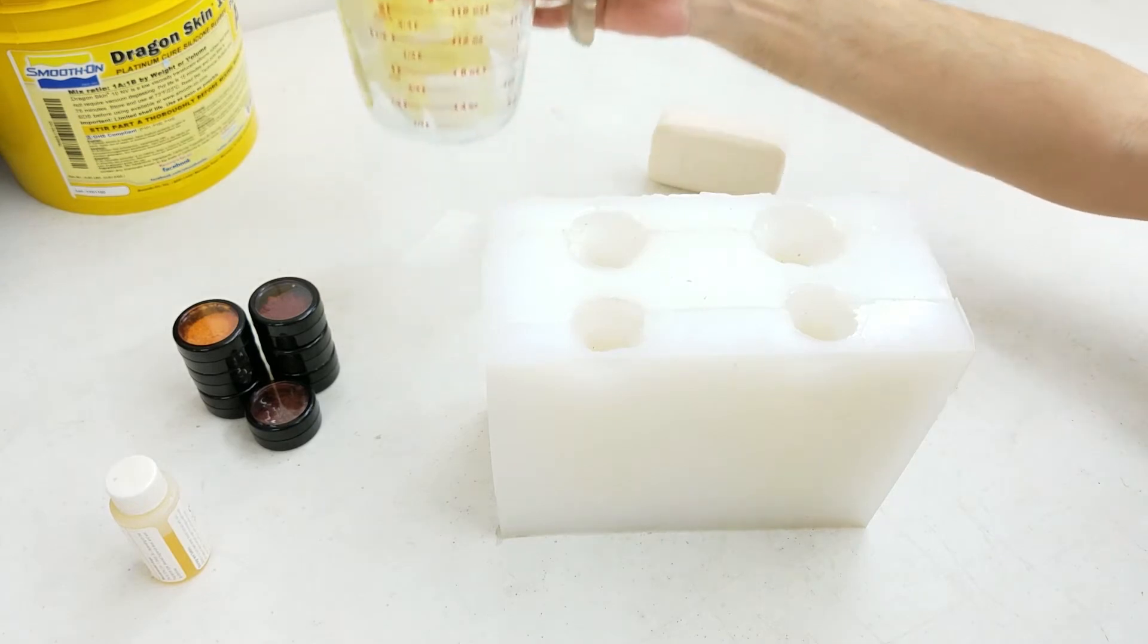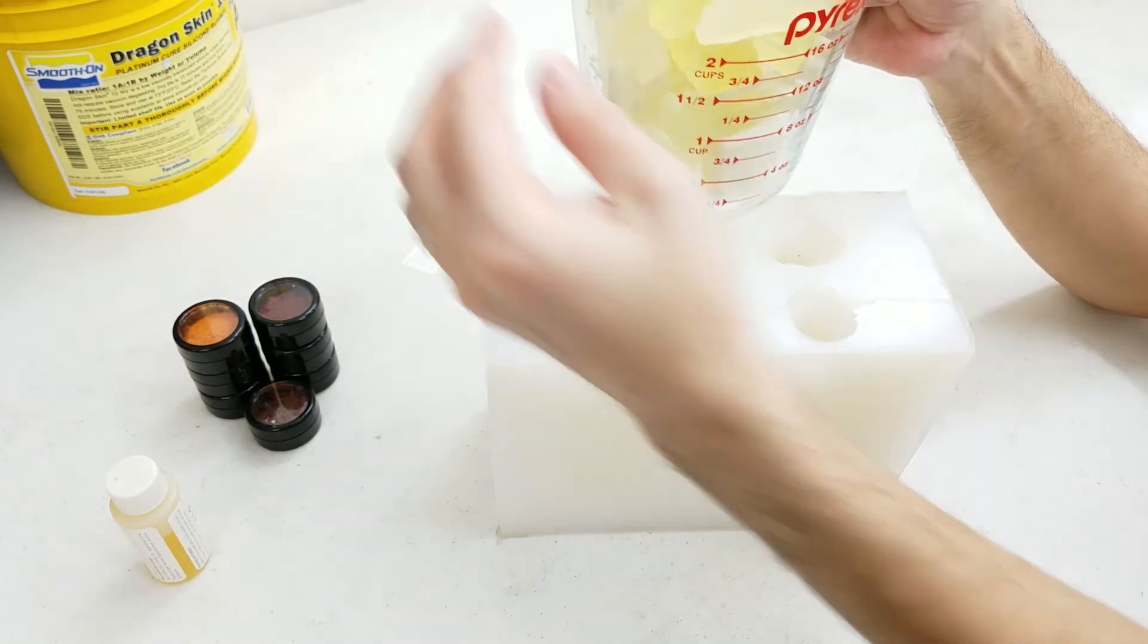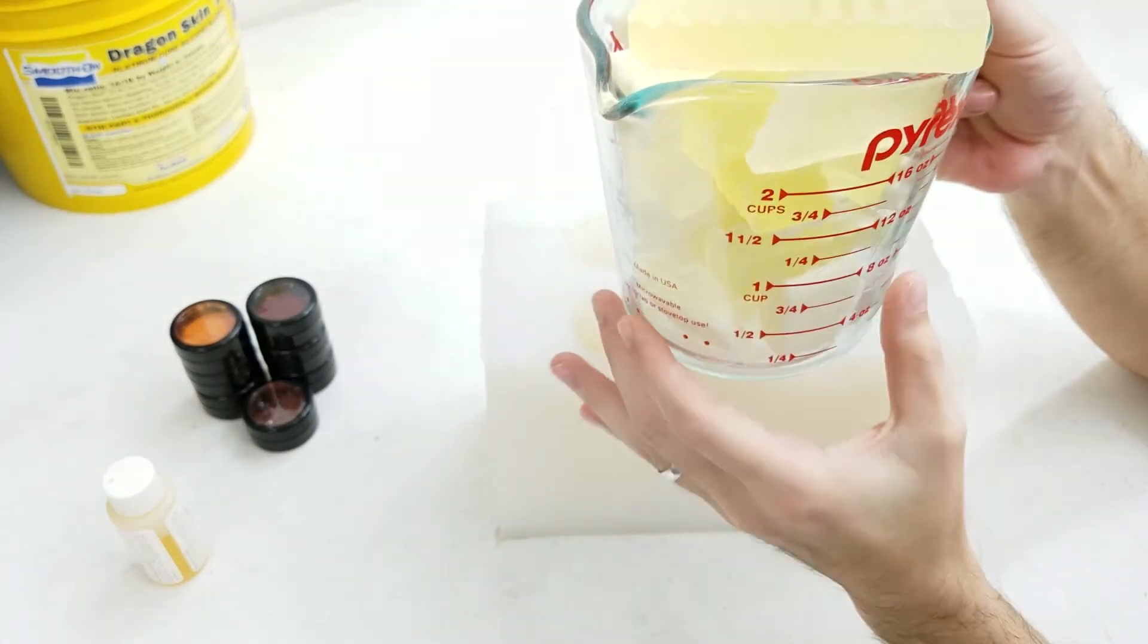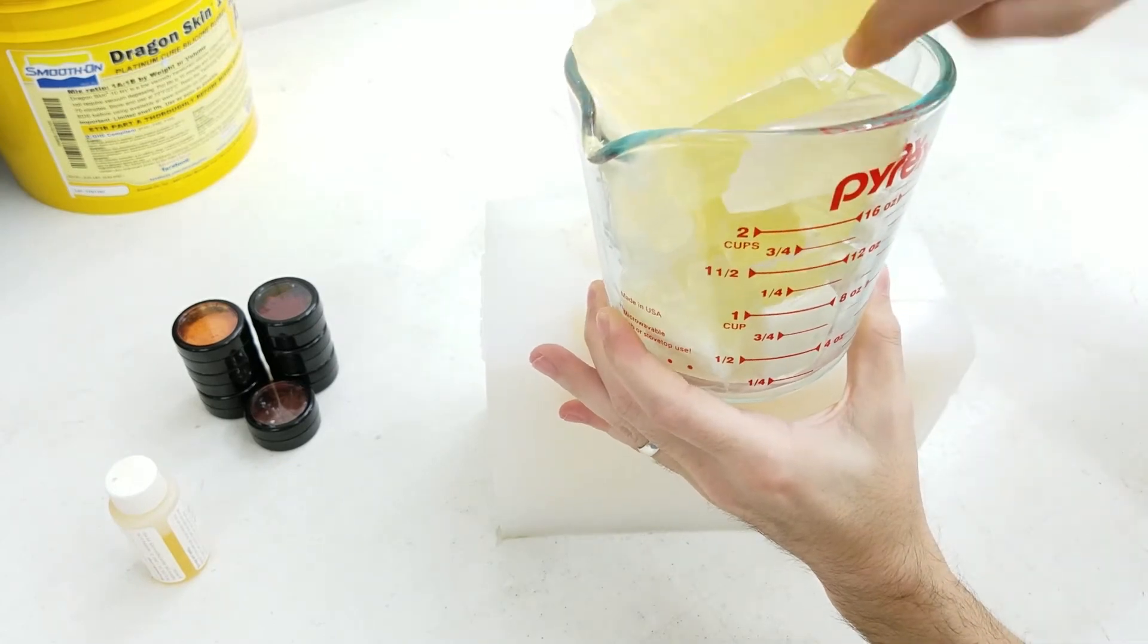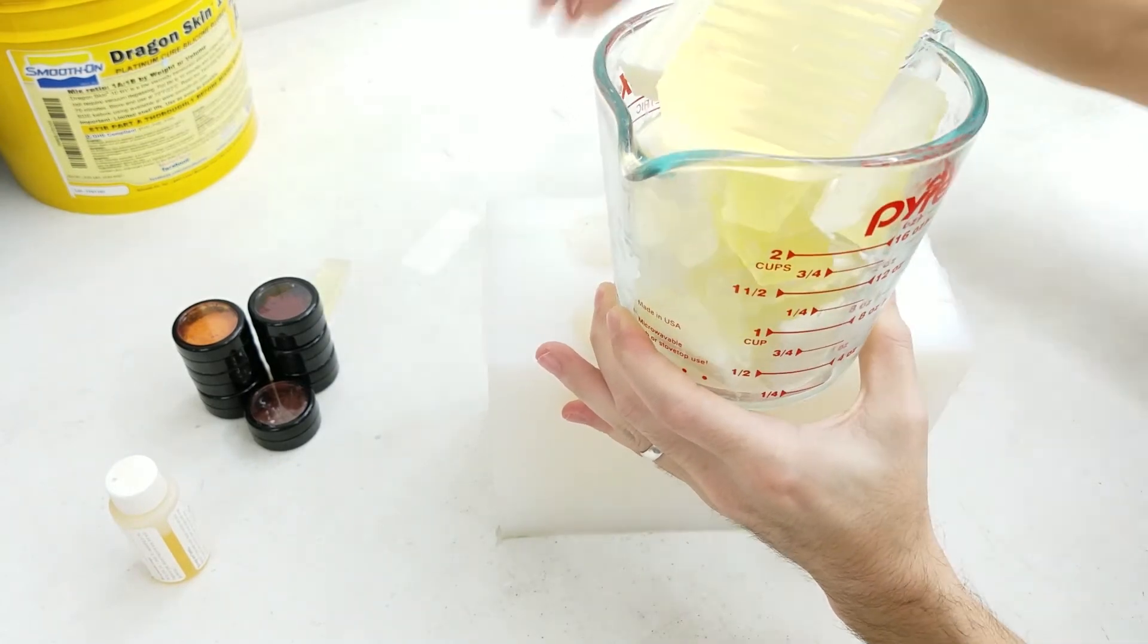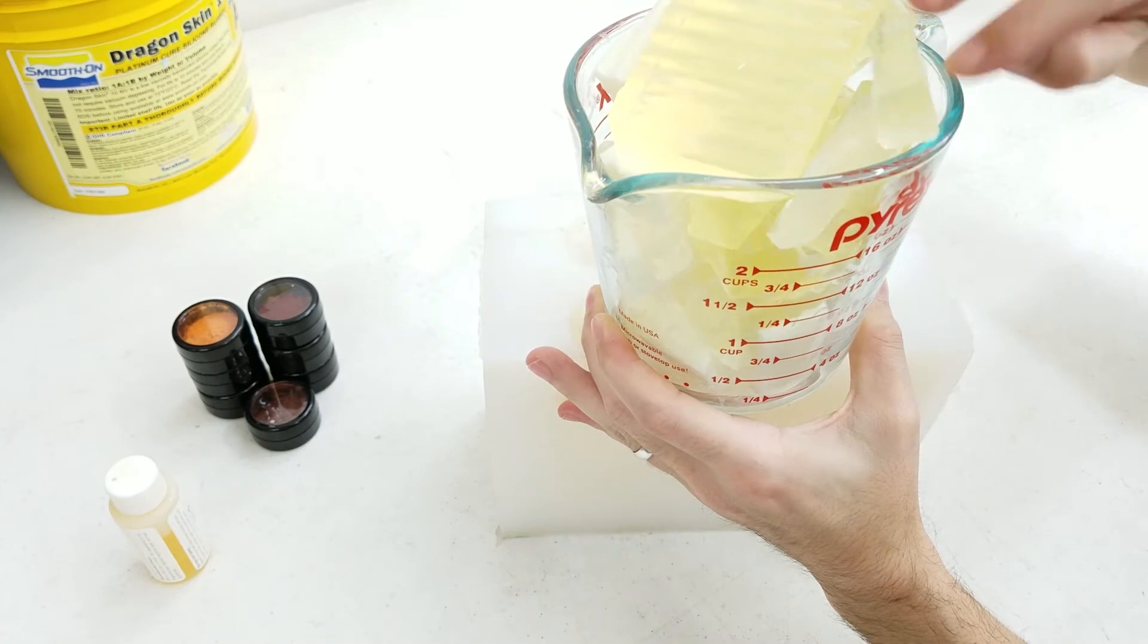Next we have our soap base. We're using a hodgepodge of bases we had lying around here so you'll see some crystal clear, some hemp seed oil, there's some goat's milk base, and you may even see a little honey in there as well.